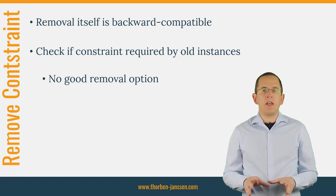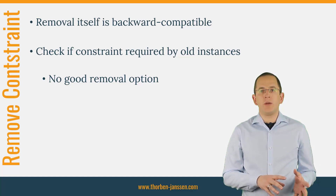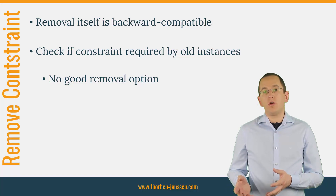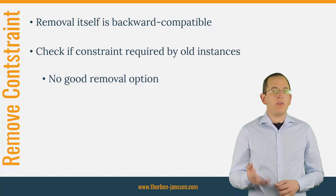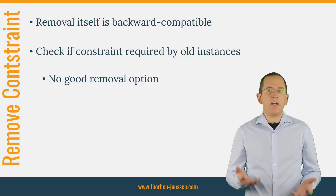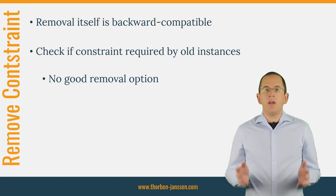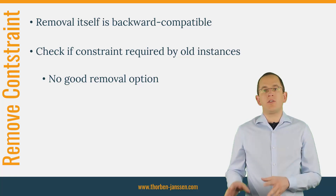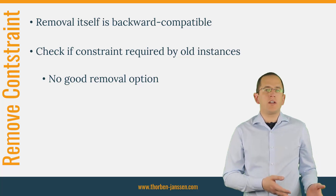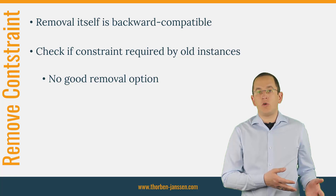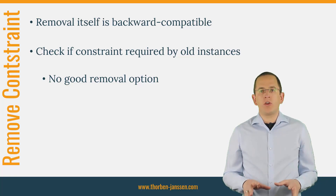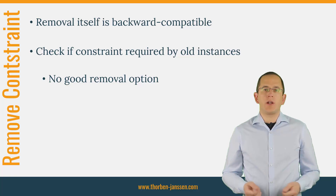But you need to check if there are any old use case implementations that would break if any database record doesn't fulfill the constraint. During the rolling update, instances of the new version of the application might write some records that do not comply with the no longer existing constraint. If that breaks any old code, you are in trouble. You can't remove the constraint because some reading use cases of the old version will break. You also can't keep the constraint because some write operations of the new version will fail. Your only option is to remove the constraint and to roll out the update quickly.